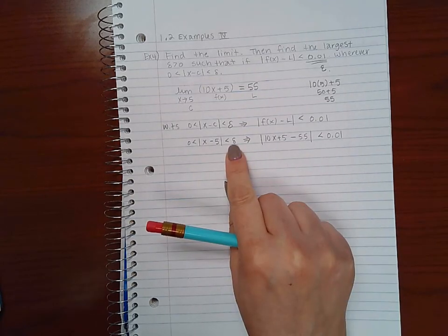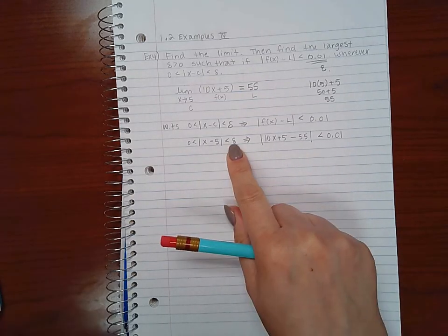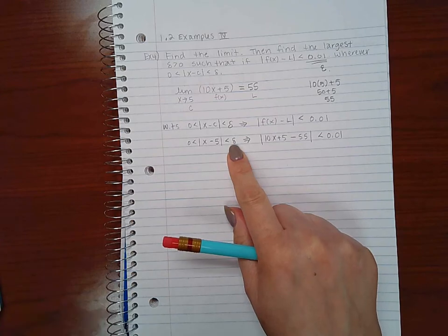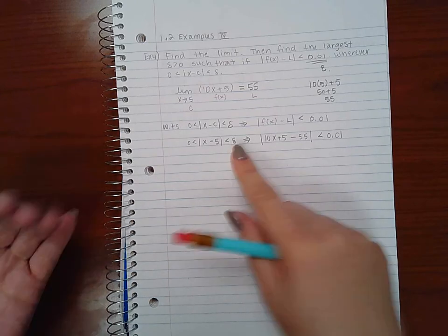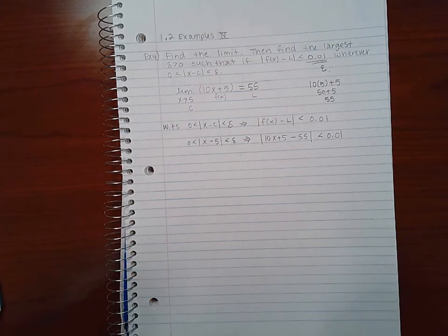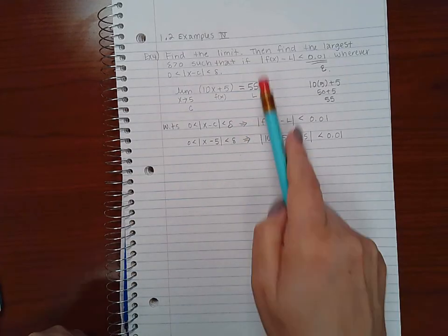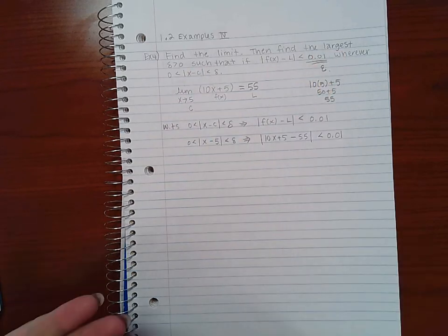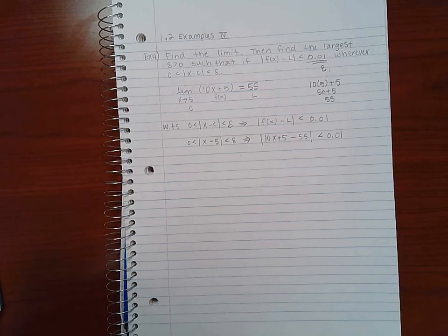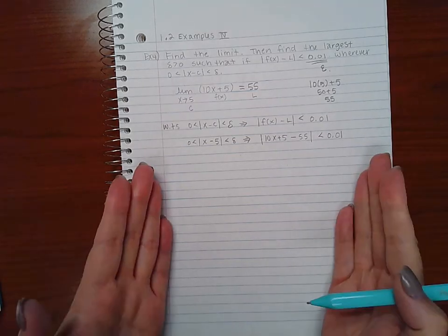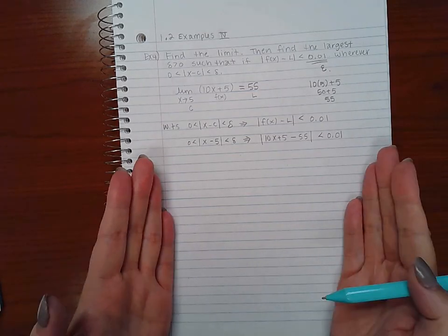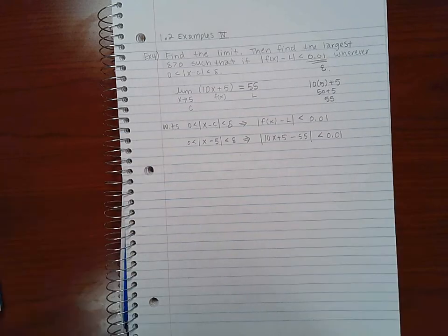Now if you refer to the previous example, all we had to do was the side work to figure out what the delta was, and then we went backwards to figure out the proof. Well, here it never actually says for me to prove anything, it just says for me to find the delta. So basically what I'm doing here for this problem is exactly what I did for the side work in example 3.